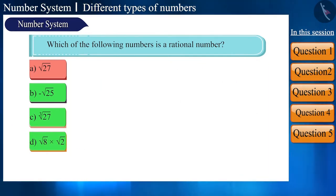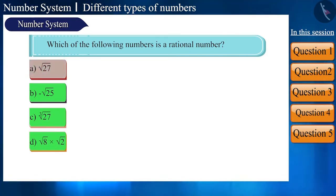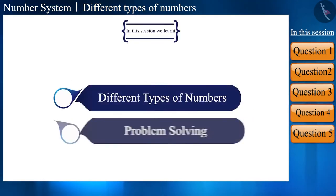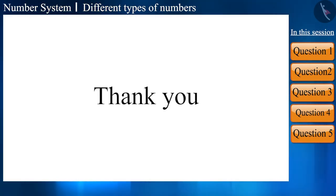Friends, at first it may seem there are many irrational numbers visible, but when we closely observe, only one number turns out to be an irrational number. So friends, that's all in this video. In this session, we solved questions based on different types of numbers. See you in the next video. Thank you.